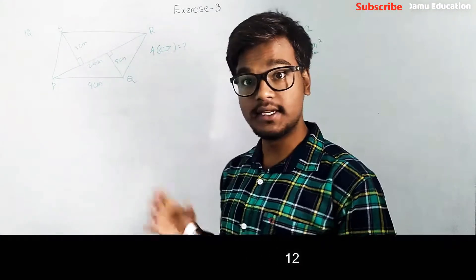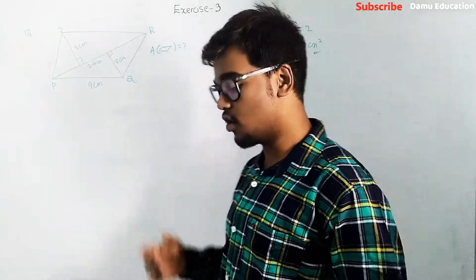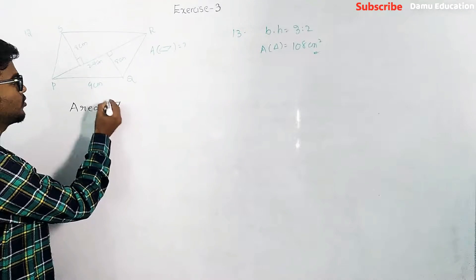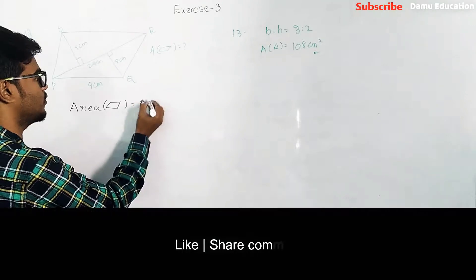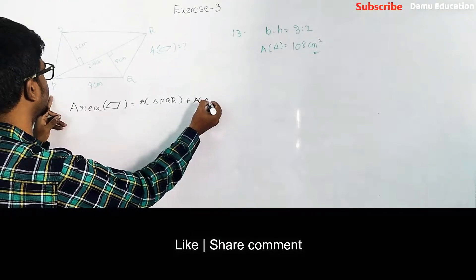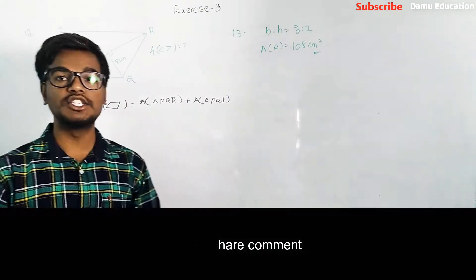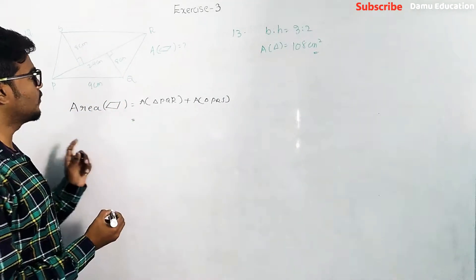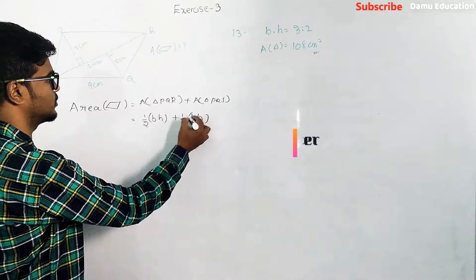The area of parallelogram PQRS equals the area of triangle PQR plus the area of triangle PRS. By summing these two triangle areas, we get the total area of the parallelogram. The given base is 9 centimeters, but we will use the triangle dimensions to proceed.